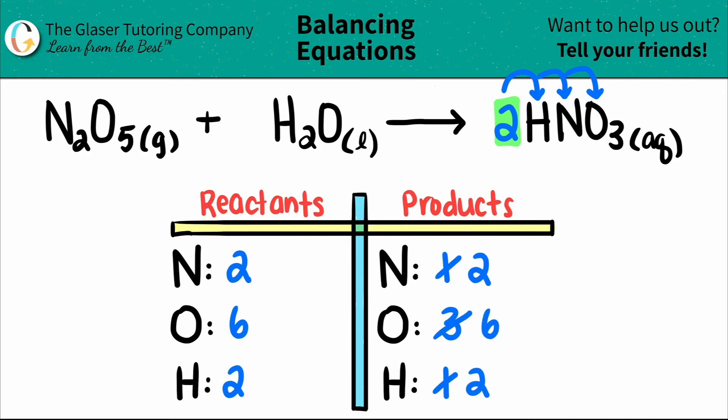And oh, look at that. By balancing one element, we balanced them all. So this one's done. This is the balanced equation: 1 N2O5 plus 1 H2O, which will yield 2 HNO3s.